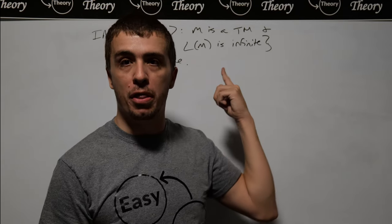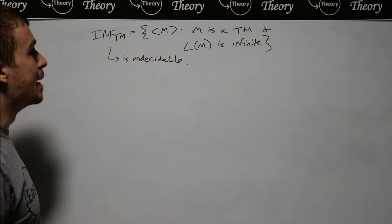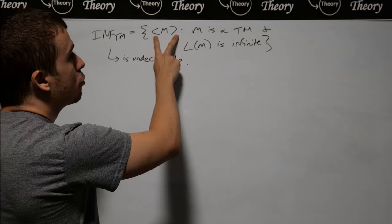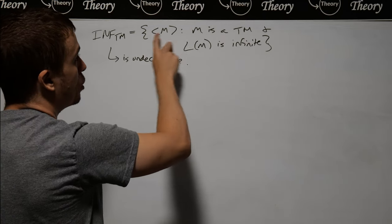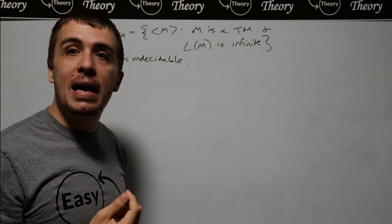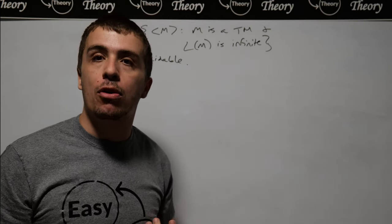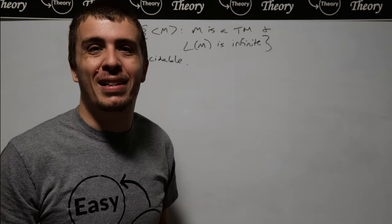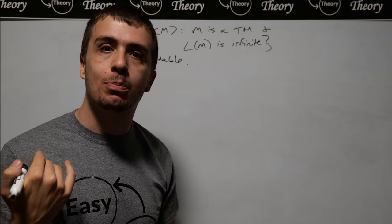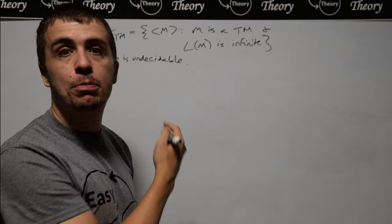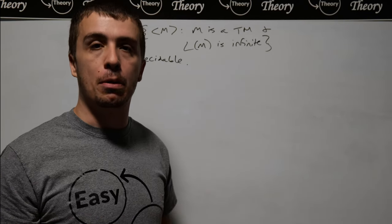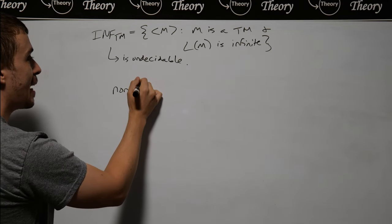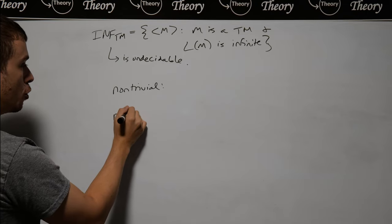I want to apply Rice's theorem to this language, which is called inf-TM — the set of all Turing machine descriptions such that the language of that machine is infinite. I want to figure out whether a Turing machine accepts infinitely many things. You can show fairly straightforwardly that there's a reduction from the acceptance problem for Turing machines to this, making it undecidable, but I want to do a much easier proof via Rice's theorem. To apply Rice's theorem, we need to show it is a non-trivial property of Turing machine languages.